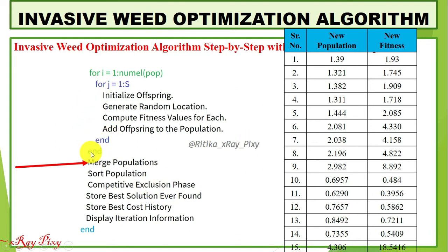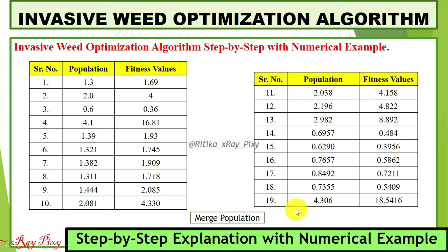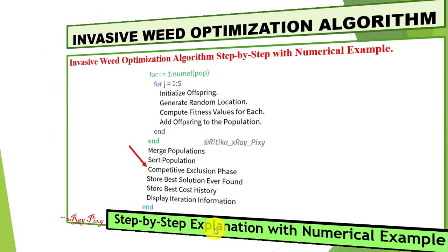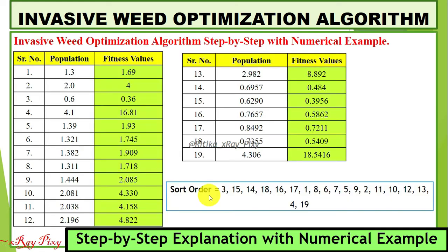We exit this loop and proceed to merge the population — combining the initial population with all newly computed solutions, giving a merged population of 19 individuals (indices 1 to 19). Next, we sort the merged population by fitness value from minimum to maximum. The sort order obtained is: 3, 15, 15, 14, 18... and so on, sorted from the minimum to maximum fitness value.